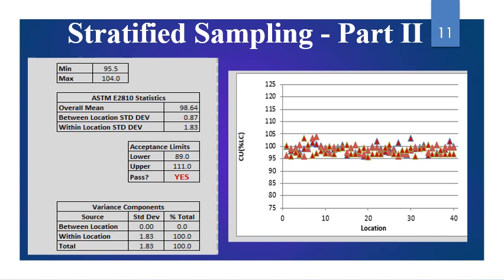All 120 assay values are entered into the Excel sheet provided by ASTM, available on the ASTM website. Hypothetical values ranging from 95.5% to 104% were entered, producing results including between-location standard deviation, within-location standard deviation, and overall mean. As per ASTM E2810 statistics, lower and upper values are calculated. Based on these statistical calculations in the ASTM Excel sheet, the CU is passing and the stratified sampling assay passes.